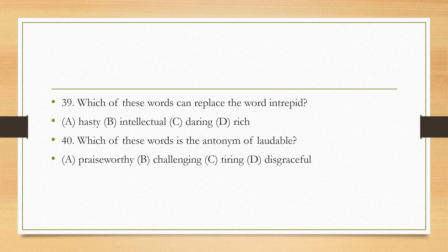Question nine: 'Which of the four words can replace the word intrepid?' Options: hasty, intellectual, daring, and rich. If we already figured out the contextual meaning of intrepid while reading the passage, it takes seconds to answer. We established that intrepid means being gutsy or daring enough to take risks. So the correct answer is daring. This shows why understanding contextual vocabulary while reading saves significant time when answering questions.